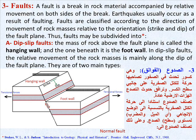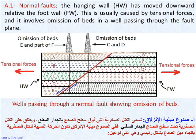The mass of rock above the fault plane is called the hanging wall, and the one beneath it is the foot wall. In dip-slip faults, the relative movement of the rock masses is mainly along the dip of the fault plane. They are of two main types: A1, normal faults — the hanging wall has moved downward relative to the foot wall. This is usually caused by tensional forces and involves omission of beds in a well passing through the fault plane.